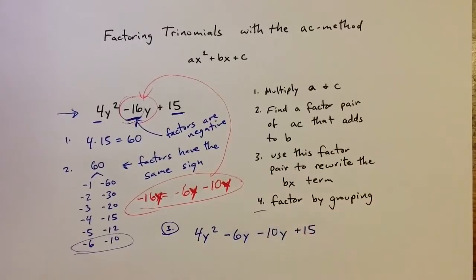And then in the fourth step, I can factor by grouping. So if I look at the common factors of the first two terms, I can factor out a 2y, and then 2y minus 3 is left behind, because y is common to both of those factors, and both of the numbers are even.